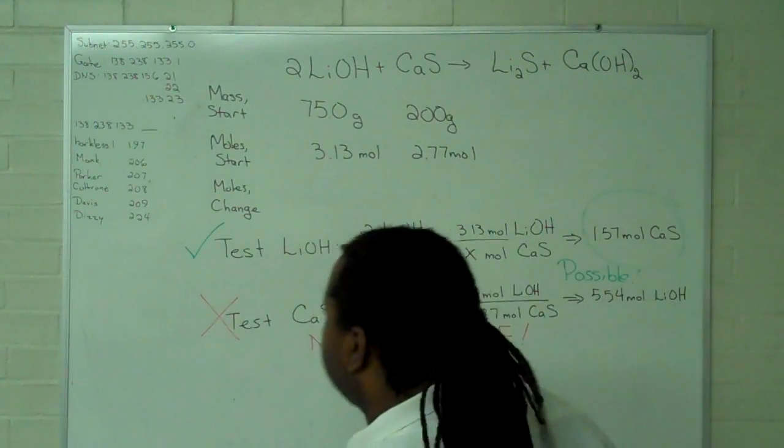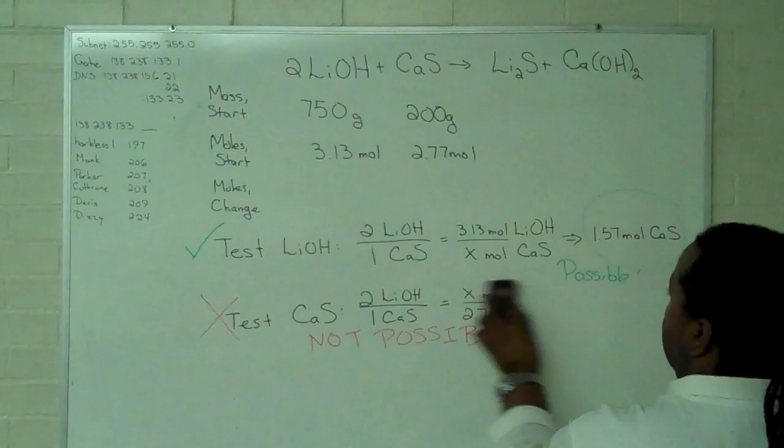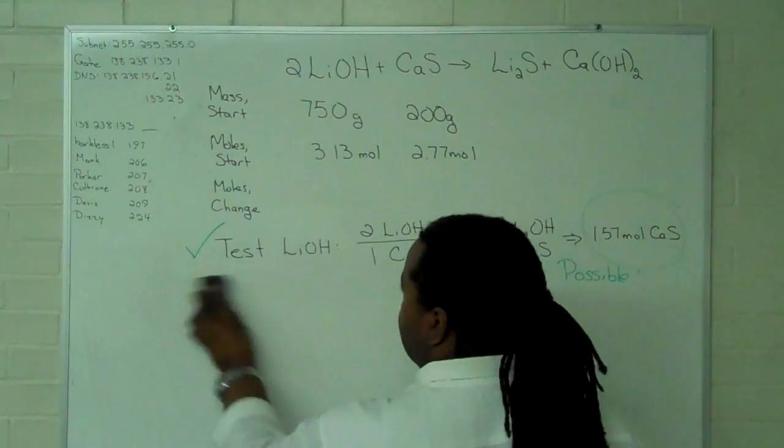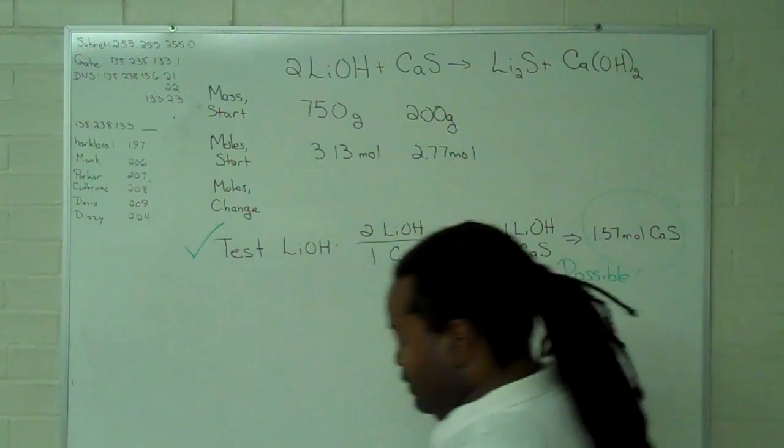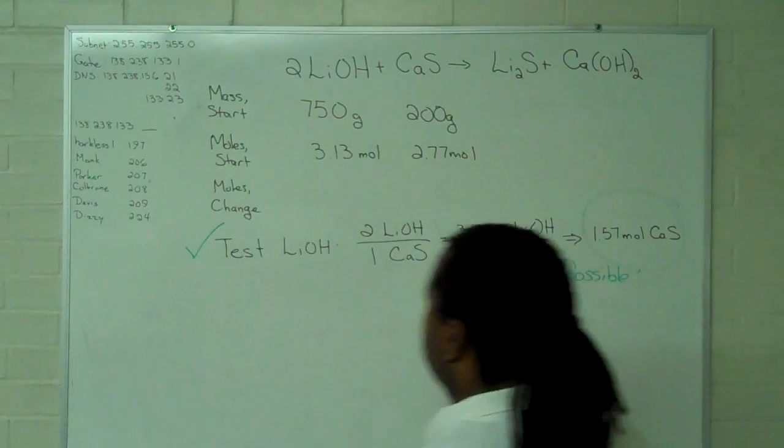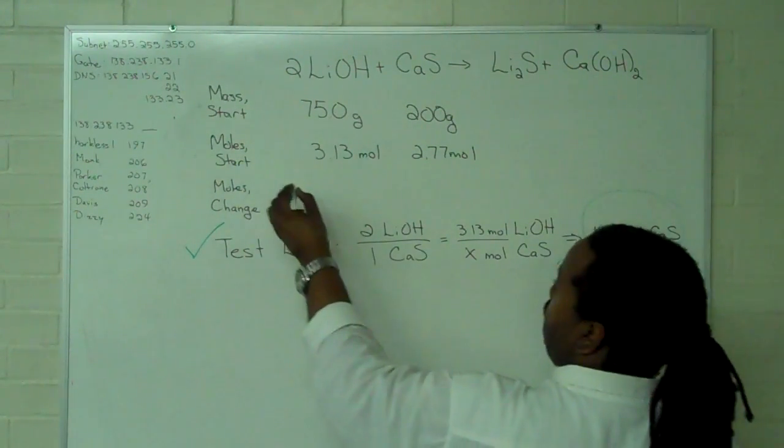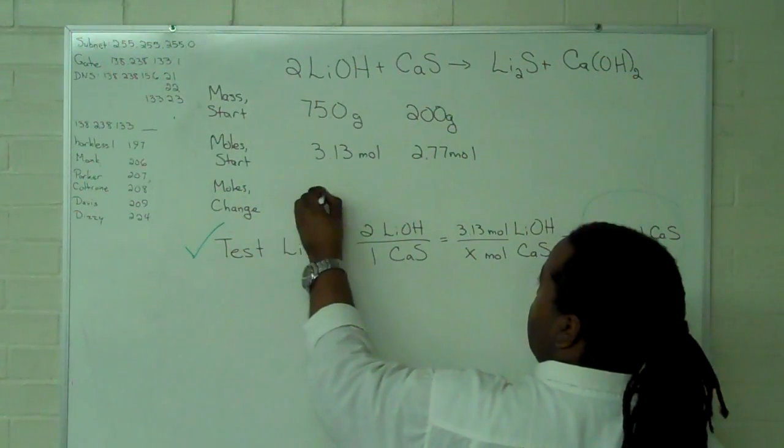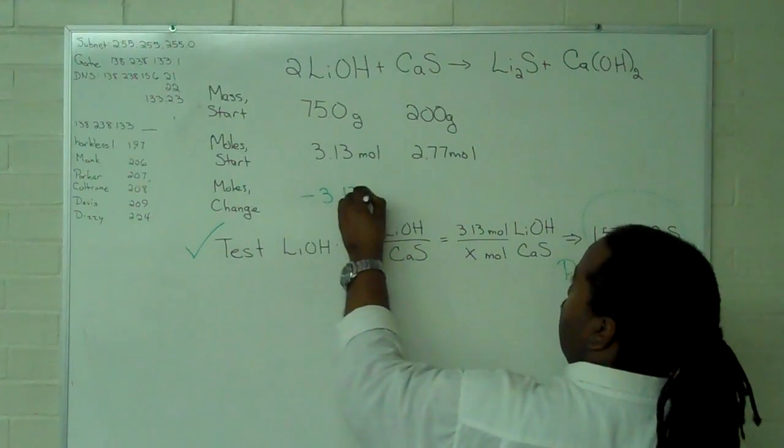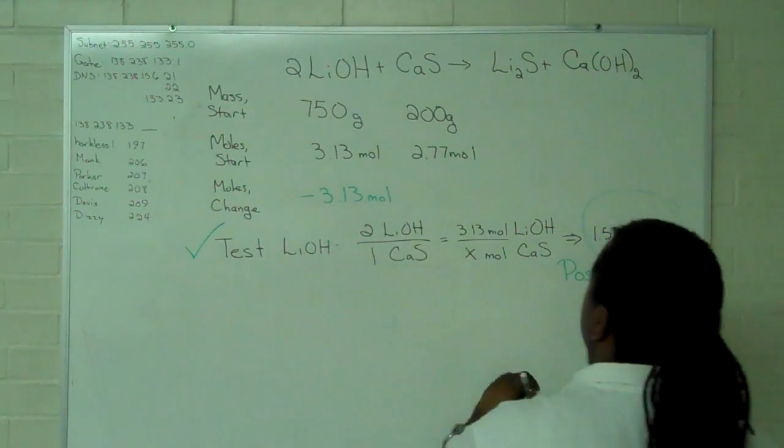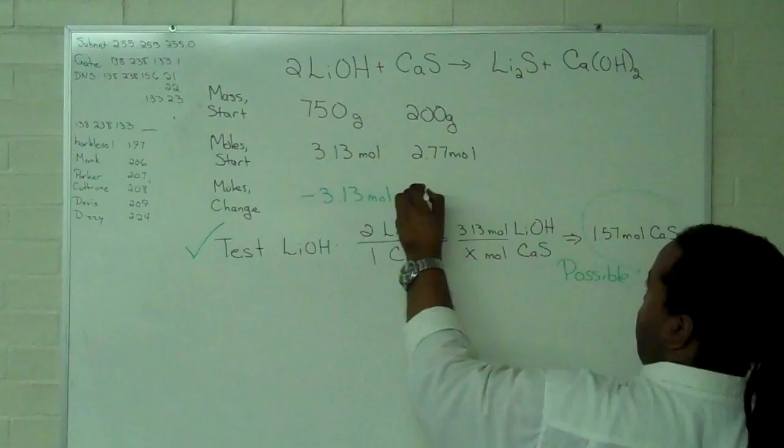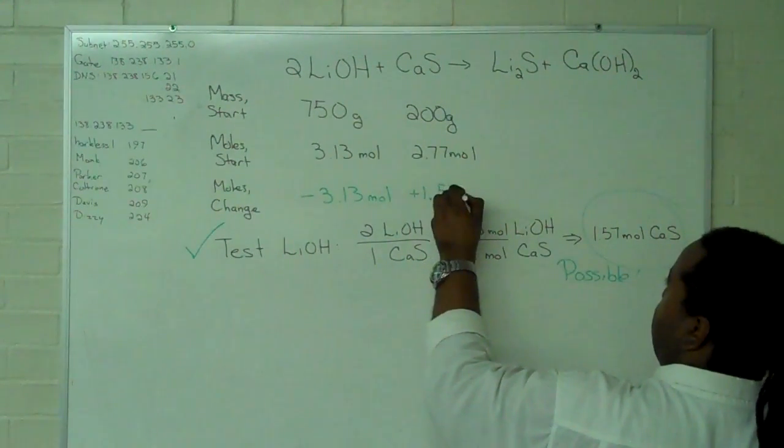And so, because we've found what's possible, we can erase the failed test and copy this information over into our table. So, we now know that we are going to use all of the lithium hydroxide, and we know how much of the calcium sulfide we will be using.